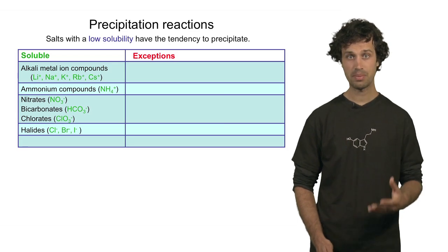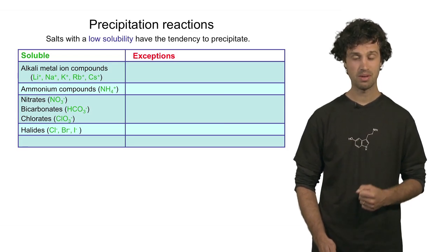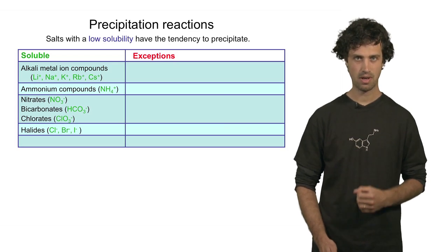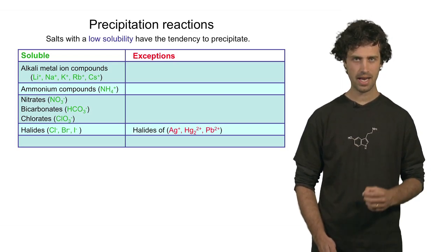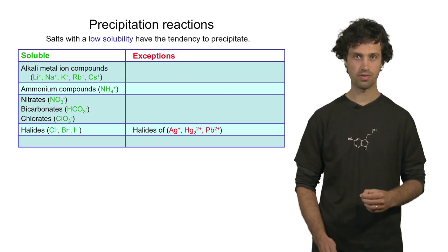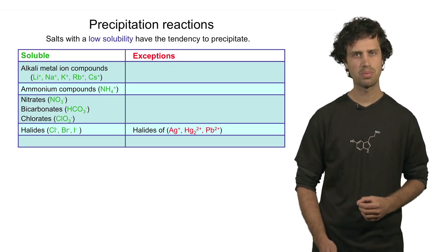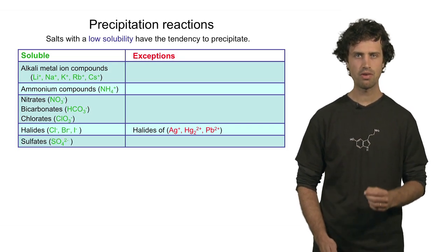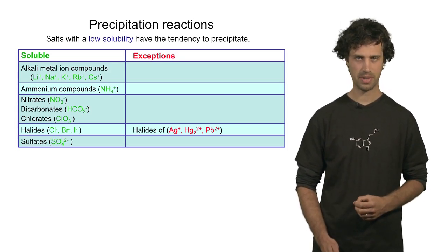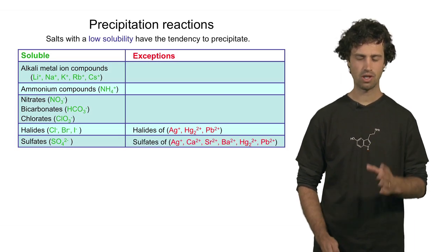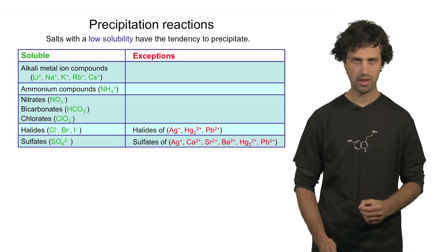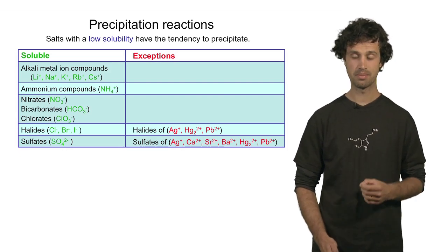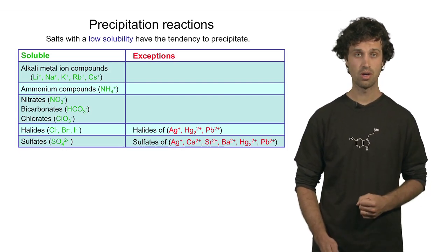Halides, which are compounds that contain Cl⁻, Br⁻, or I⁻, are also soluble compounds. However, there are exceptions. When the halide anion combines with silver, mercury(II), or lead(II)+, then the compound is insoluble. Sulfates are also soluble compounds, except when the sulfate anion combines with silver, calcium, strontium, barium, mercury(II), or lead(II)+.